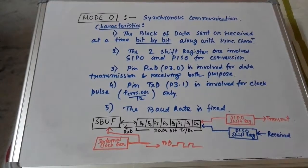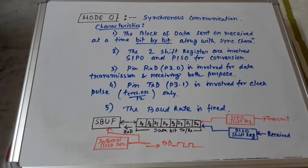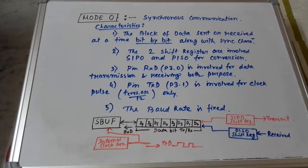In conclusion for Mode 0: two signals — data and clock — are used via the RXD and TXD pins. The RXD line receives data serially from PISO and transmits through SIPO. In this mode, only parallel devices are connected, but communication occurs in serial mode.